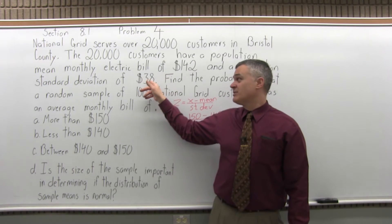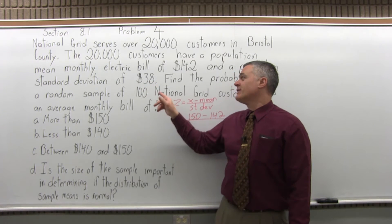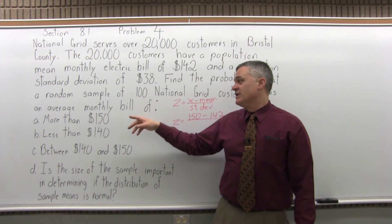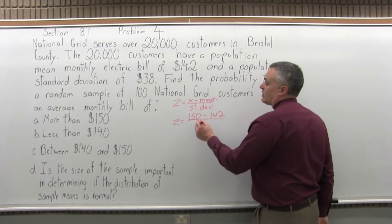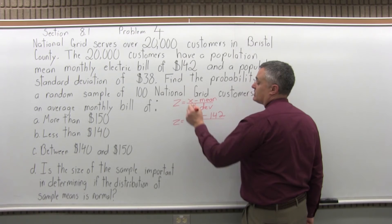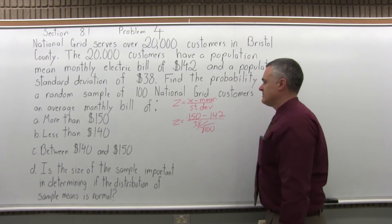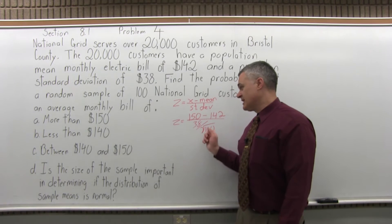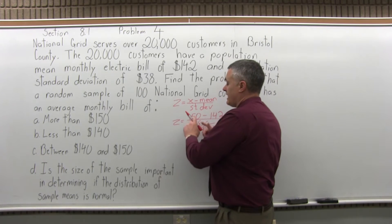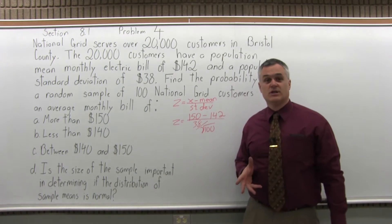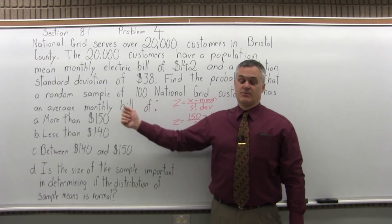From one customer to the next, the average spread in the electric bill is $38 a month, but that's not what I want here. I want the standard deviation from one sample of 100 customers to the next — that's called the standard error of the mean. It's the standard deviation of the population divided by the square root of the sample size. The sample size is 100, so we use 38 over the square root of 100.